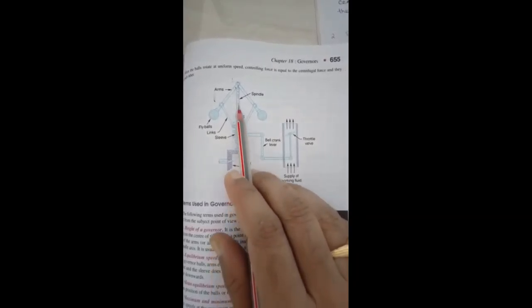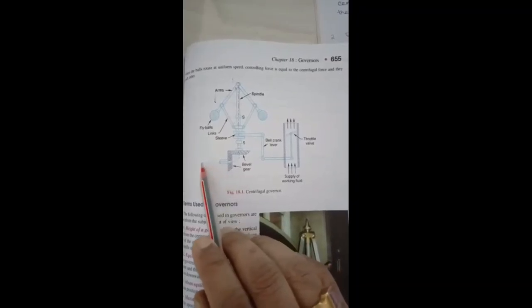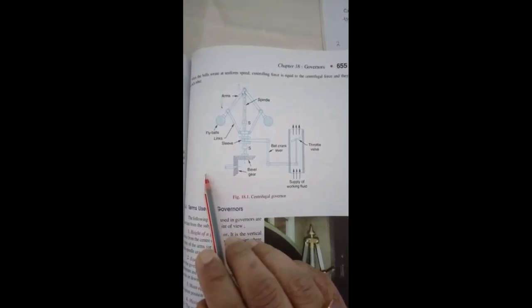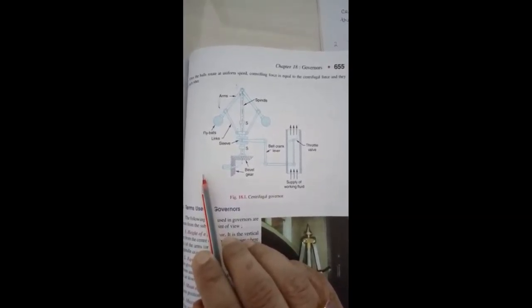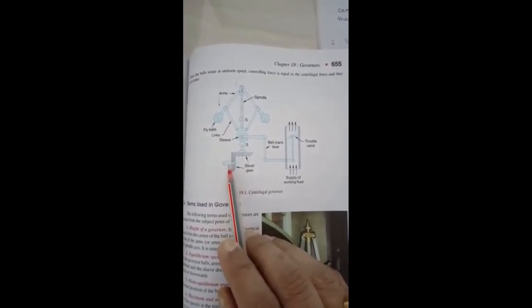This is the spindle of the governor. This shaft is connected to the engine. Let us say the engine speed is 100 rpm. Now load increases. If load increases, then the shaft speed will decrease.